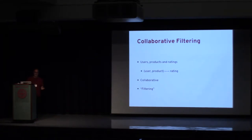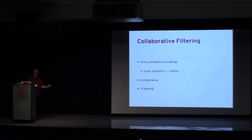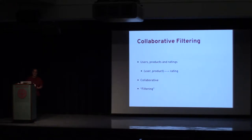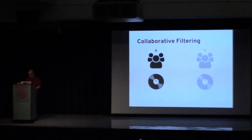For example, if you go to a movie website and give a movie five stars, you have a unique relation between yourself as the user, the movie as the product, and the rating. In this jargon, 'collaborative' means using all the data you have globally from all users, and 'filtering' basically means predicting — you're making predictions on the data you already have.